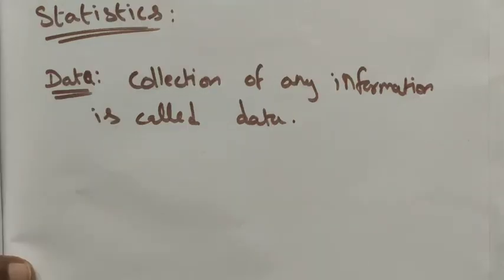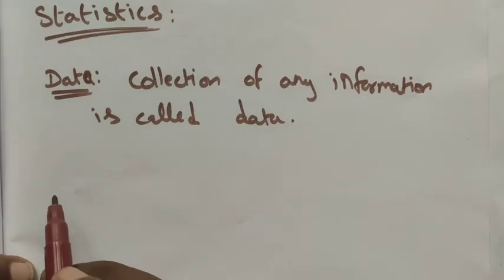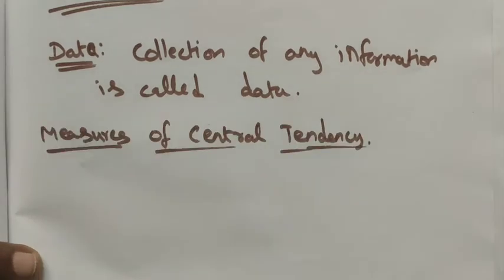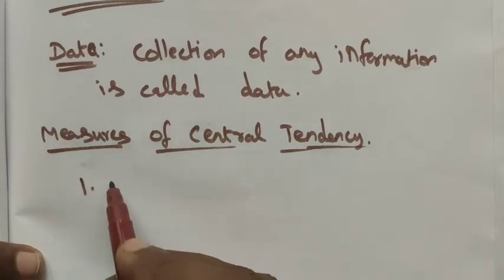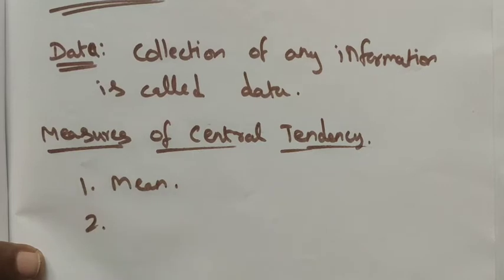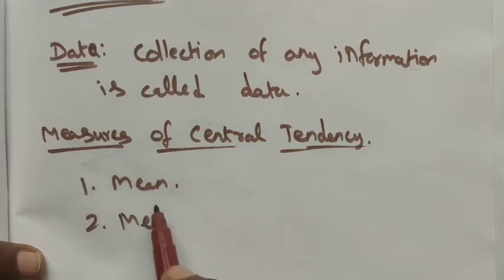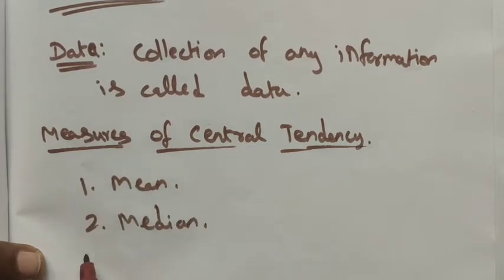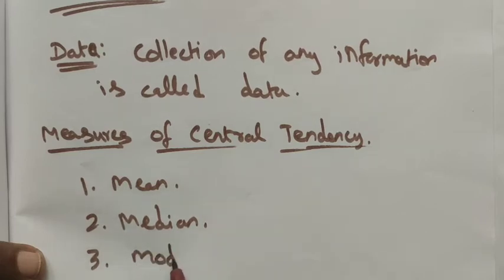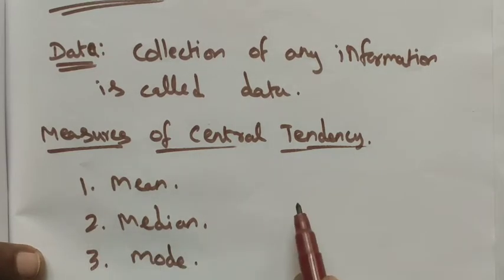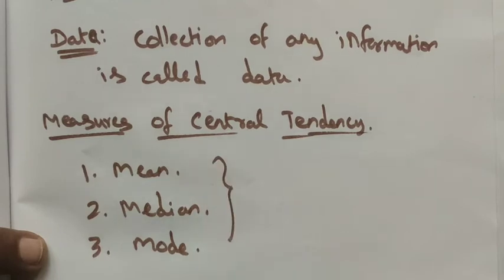In this chapter, we are going to see what is the average of the data — that is the main thing here. Now we want to know what are the measures of central tendency. The measures of central tendency have three different methods: one is mean, another one is median, and the third one is mode.